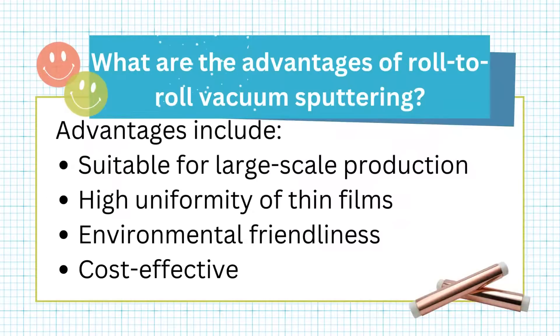What are the advantages of roll-to-roll vacuum sputtering? Advantages include being suitable for large-scale production, high uniformity of thin films, environmental friendliness, and cost-effectiveness.